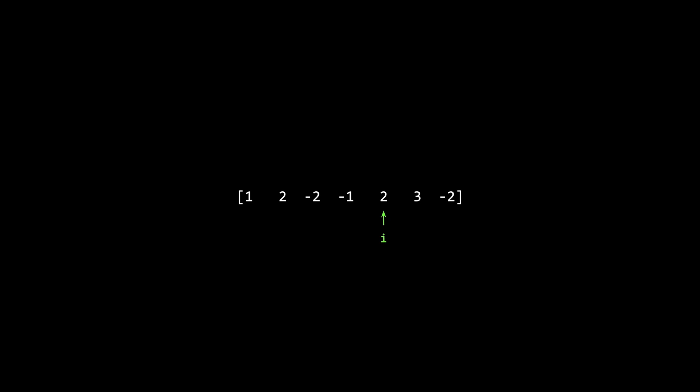There are two competing subarrays for the longest length: one with an even amount of negatives and one with an odd amount. If we are iterating and at position i there are an even amount of negatives — for example, two negatives like negative two and negative one — we know the longest positive subarray ending at i is from the beginning of the array to i. This is because an even number of negatives makes the overall product positive, and since we're pretending zeros aren't allowed, that is obviously the longest subarray.